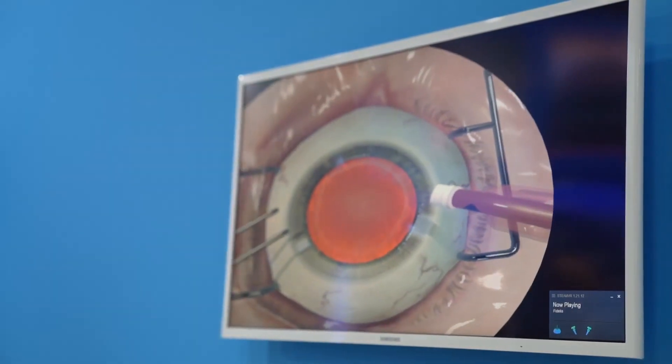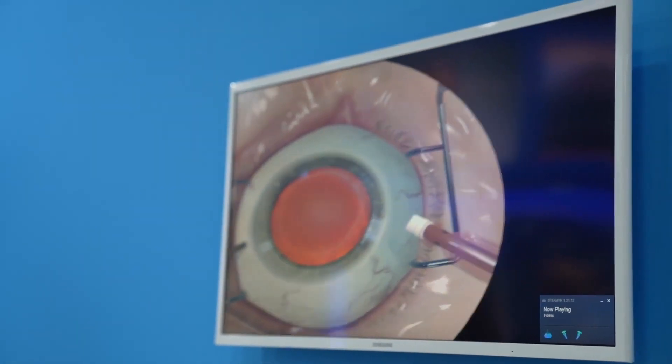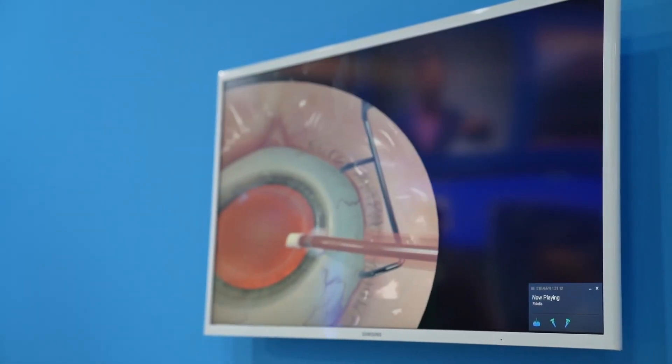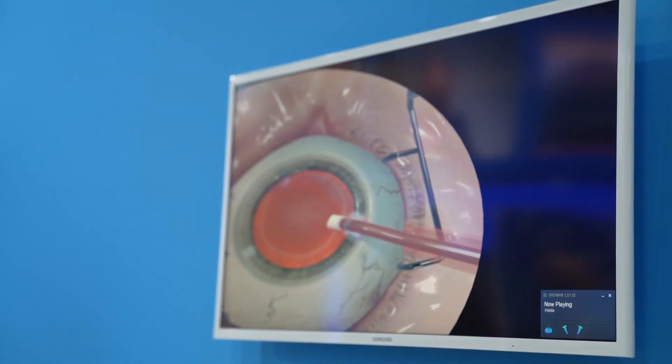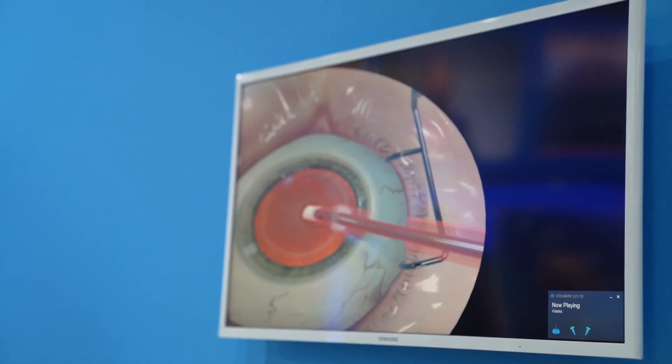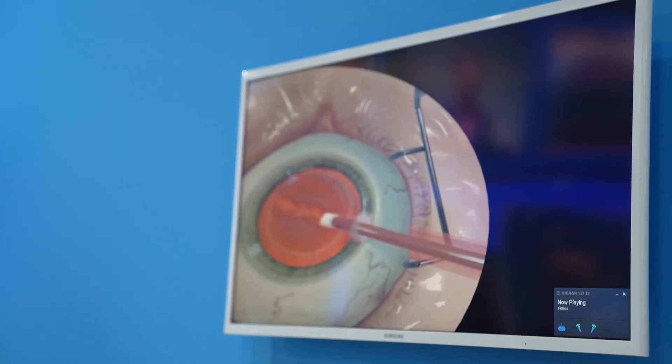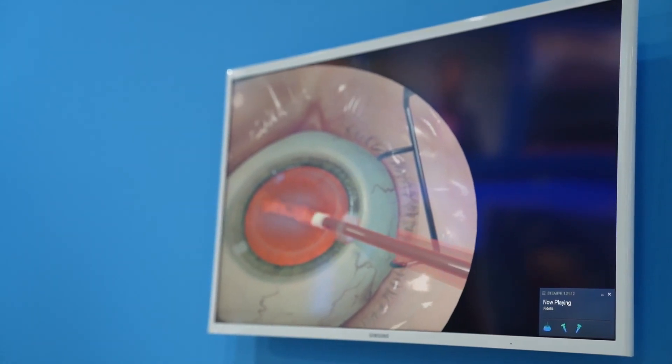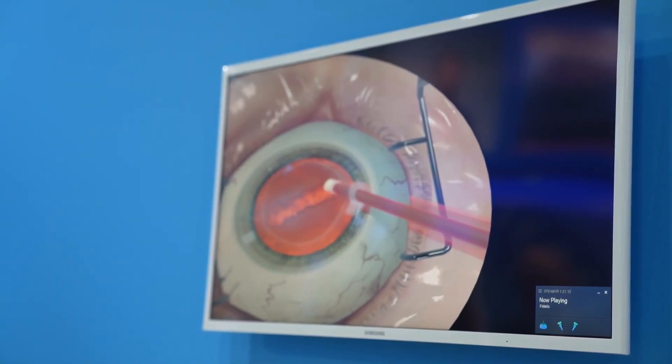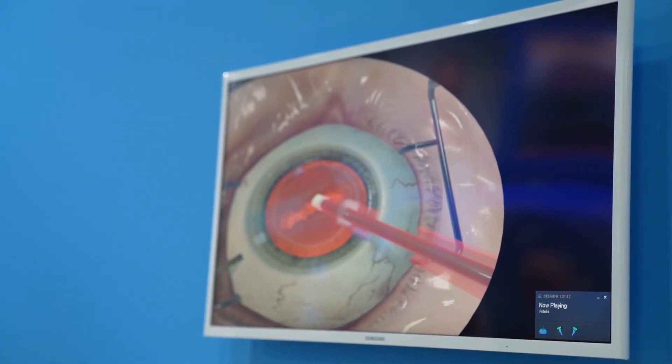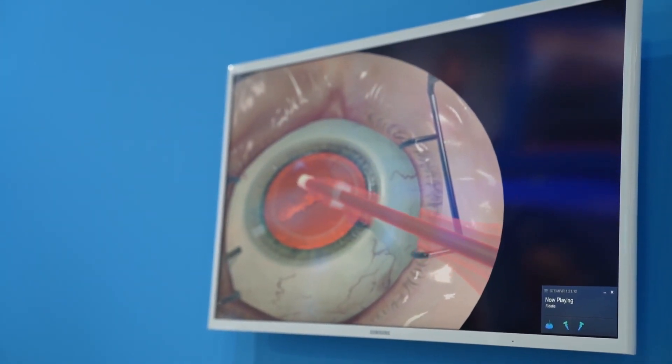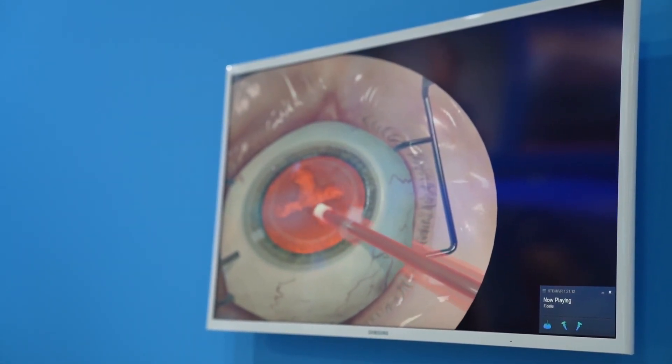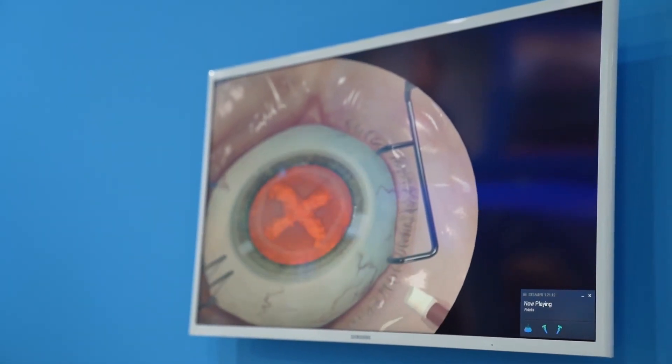We'll now do FACO. Stabilize the eye, insert the hand instrument. Using the integrated Centurion foot switch on the ground, we can groove and, using ultrasound, break up the cataract. I can rotate the lens, stabilize the eye.